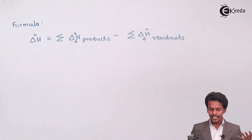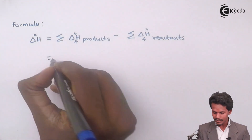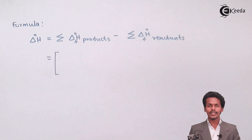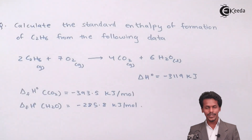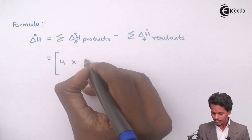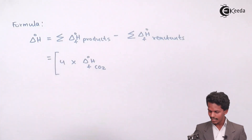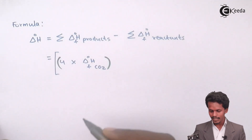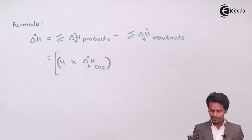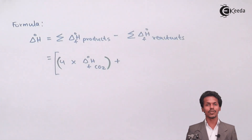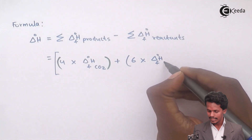For the products, we write their heat of formation contributions. The products are 4 moles of CO2 and 6 moles of H2O. So we write: 4 × ΔHf°(CO2) plus 6 × ΔHf°(H2O). I am writing it in this format so we don't get confused between signs and multiplication.